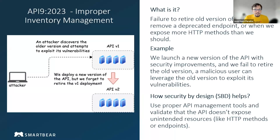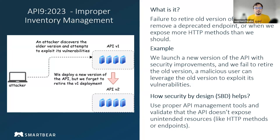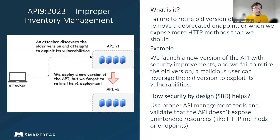Next is improper inventory management. This is basically a rename of a previous vulnerability from 2019, which was called improper asset management. So what is the concept of an asset when it comes to APIs? An asset is anything that allows us to expose operations through the API — so an API version, an endpoint, or an HTTP method can each be an asset.